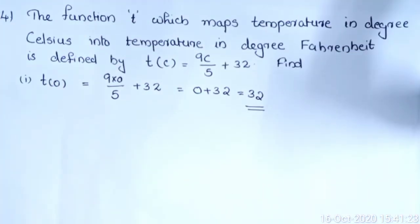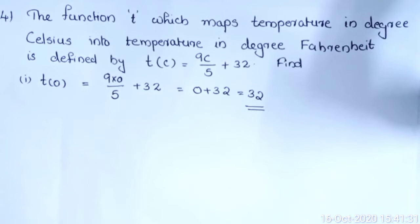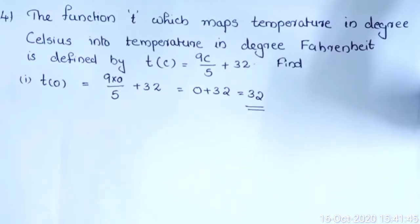Question number 4. The function T, which maps temperature in degree Celsius into temperature in degree Fahrenheit, is defined by T(C) = 9C/5 + 32. Here T is a function that maps temperature in degree Celsius into temperature in Fahrenheit, and the function is given as T(C) = 9C/5 + 32.